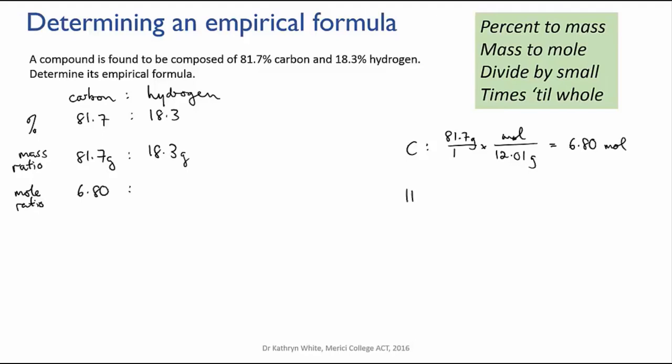And 18.3 grams of hydrogen divided by 1.008 grams per mole that gives me 18.2 moles of hydrogen. So that gives us the mole ratio of carbon to hydrogen. But we still need to get it down to the simplest mole ratio. And that leads us to step number three.